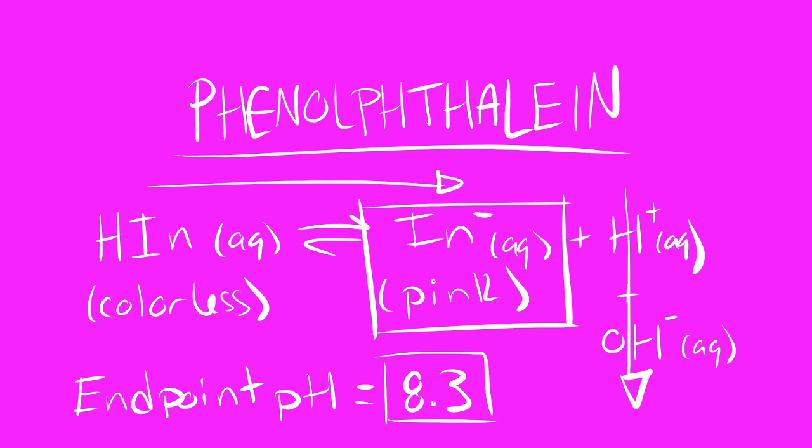In other words, we are going to be performing a titration between the acetic acid and the sodium hydroxide right up until we hit its equivalence point, which is when the solution is going to turn pink thanks to our phenolphthalein.